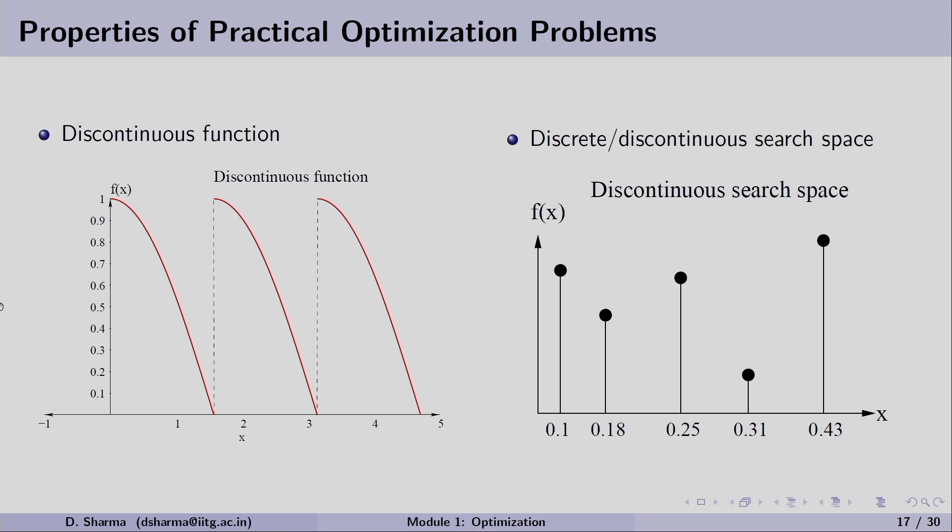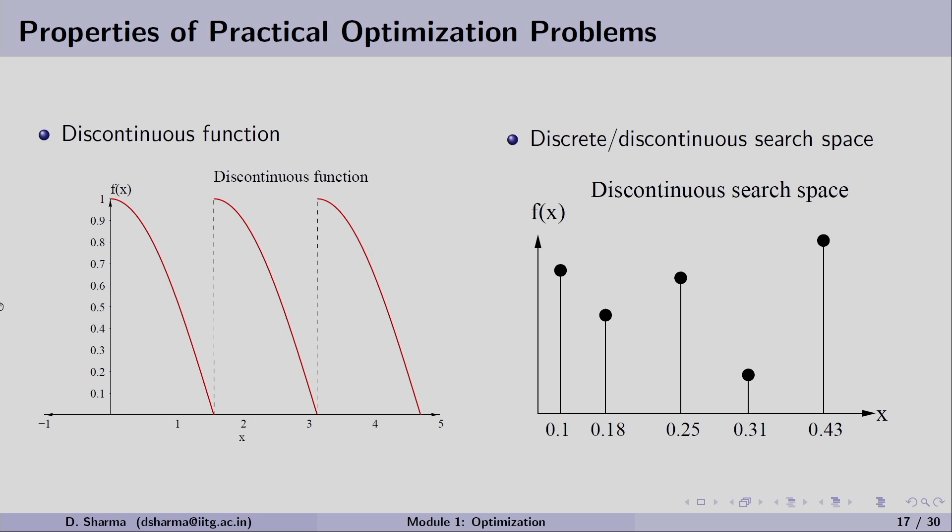Another property is the discontinuous search space. As shown in the figure, only certain discrete values of x are allowed — you cannot take any random value in that range. The optimization algorithm must find a way to evaluate the objective function and search for new points using only the discrete values of x. In the given example we have only 5 x-values, but in reality you may have a very large set of discrete values, making it a challenging task to find which set gives an optimum solution.